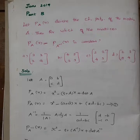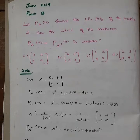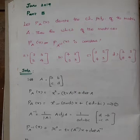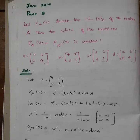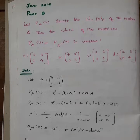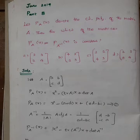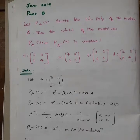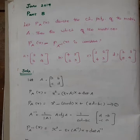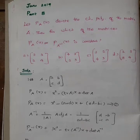Let PA of X denote the characteristic polynomial of the matrix A. We are going to talk about the notation PA of X. The question asks: which of the following matrices satisfies PA of X minus PA inverse of X is constant? There are 4 options.